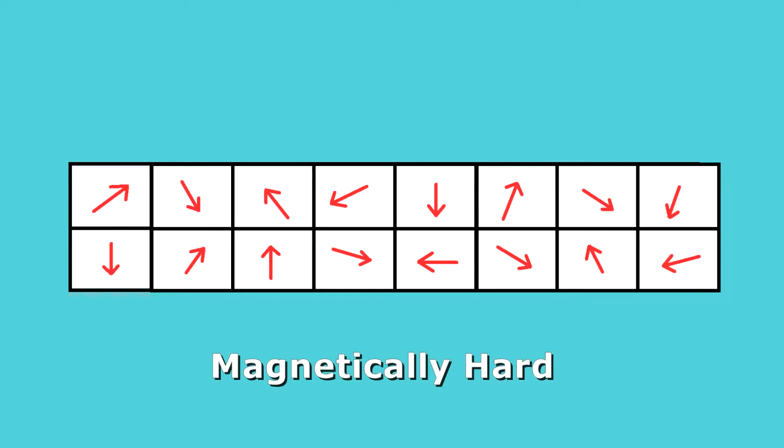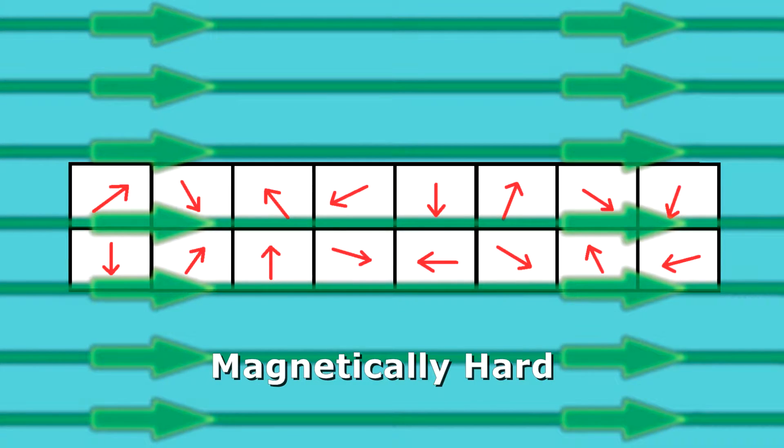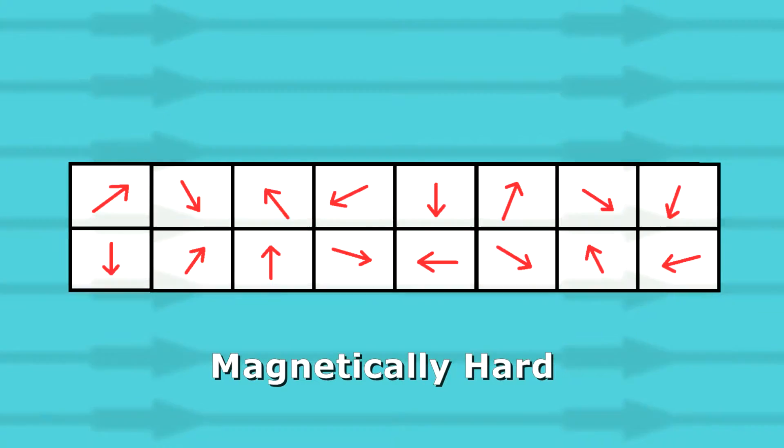Now let's say that this material is magnetically hard. Well, that means if we apply an external magnetic field to it, nothing really that interesting happens. All the arrows stay in their random positions.